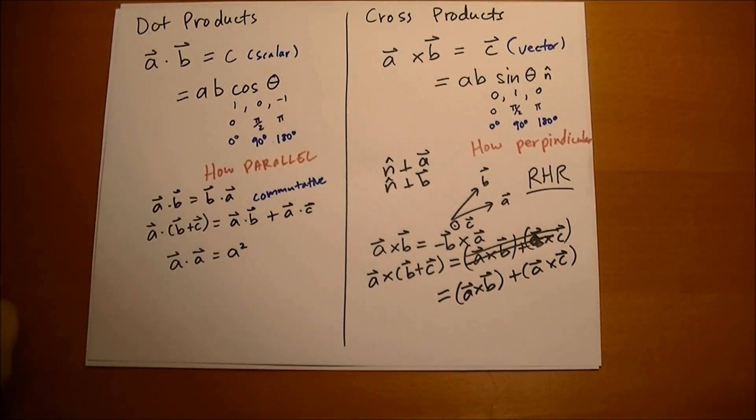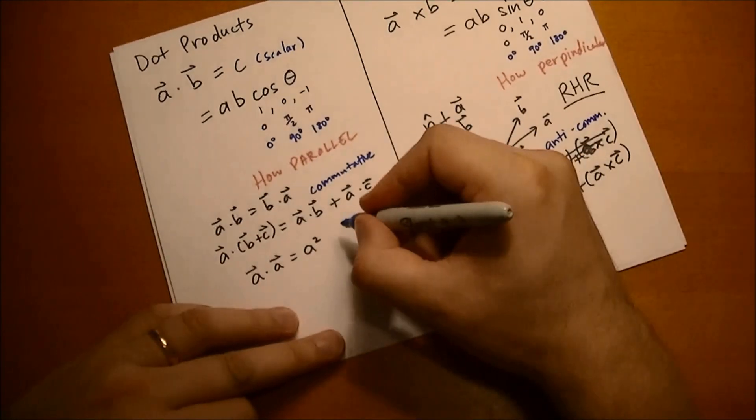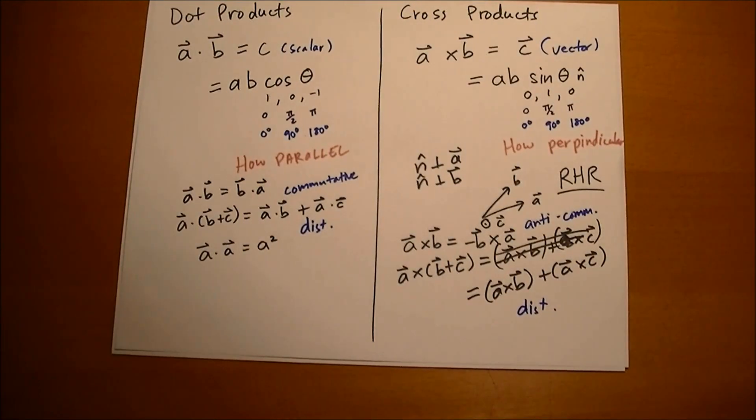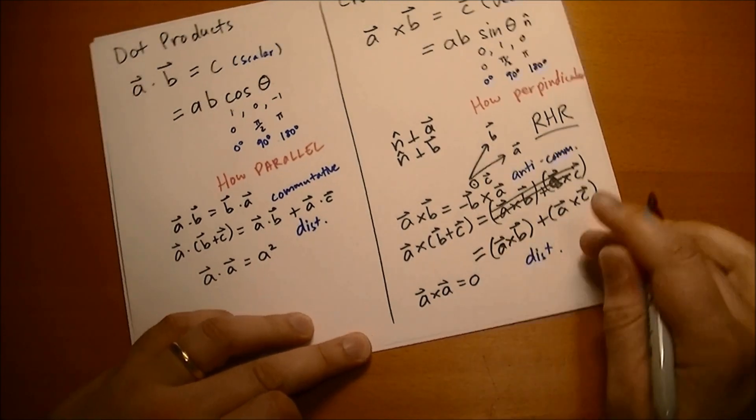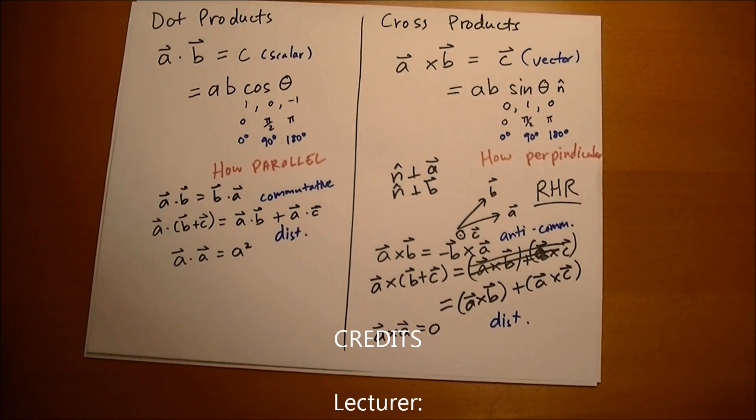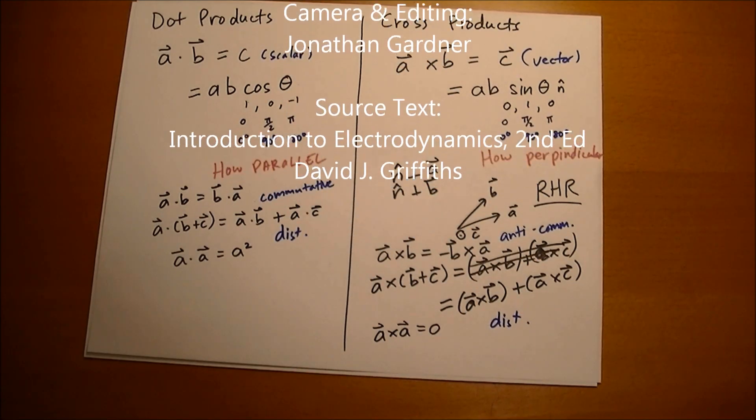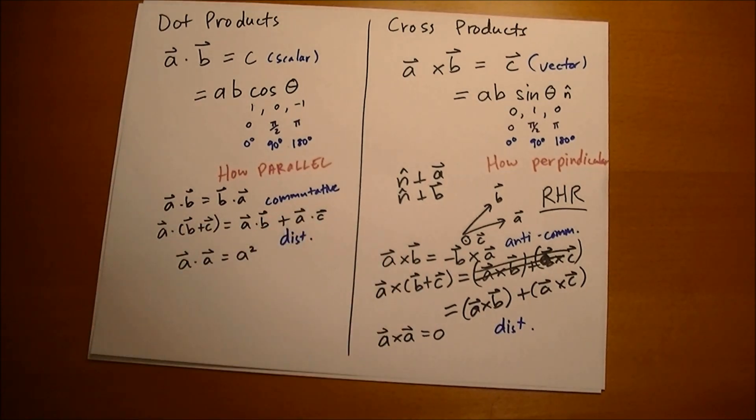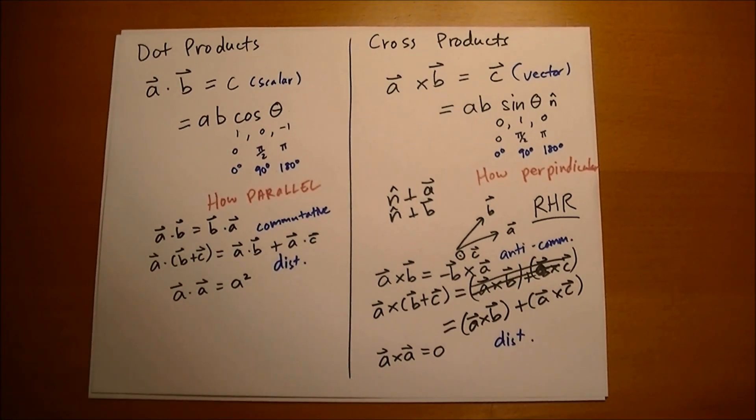So it's distributive, it's anti-commutative. And the other interesting result is that if you cross a vector with itself, then you get zero, because they're parallel with each other. Any vector that's parallel or anti-parallel is zero, because sine theta will give you zero. So that's kind of a fun little comparison of those two, the dot product and the cross product. I think people get hung up on the component form of the cross product and they never really see the cross product for what it really is.